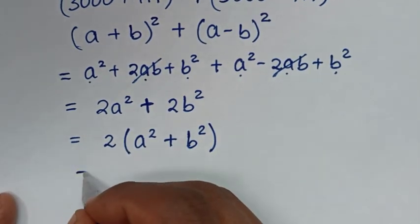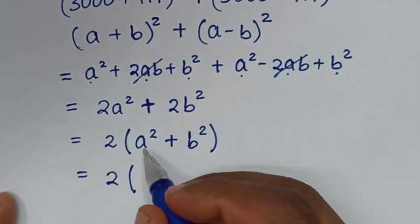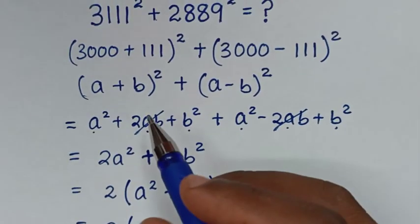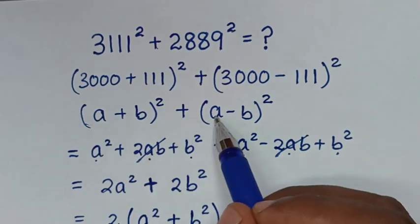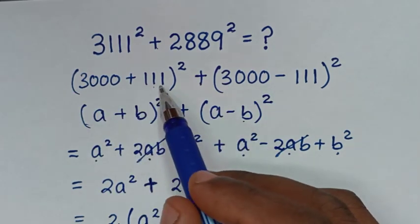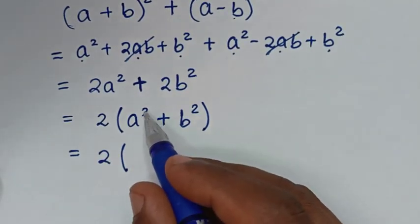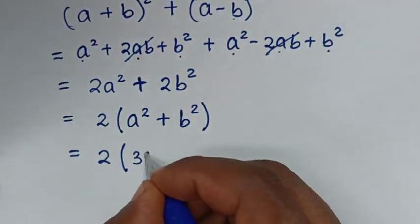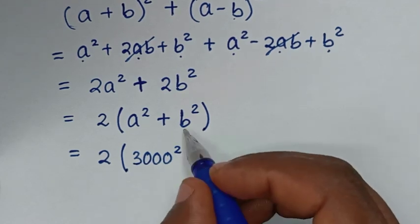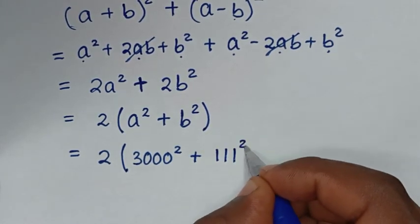Then, in the next step, before substituting, we let a equal 3,000 and b equal 111. So from a squared, it will be 3,000 squared, then plus b squared, it will be 111 squared. So the expression becomes 2(3,000 squared plus 111 squared).